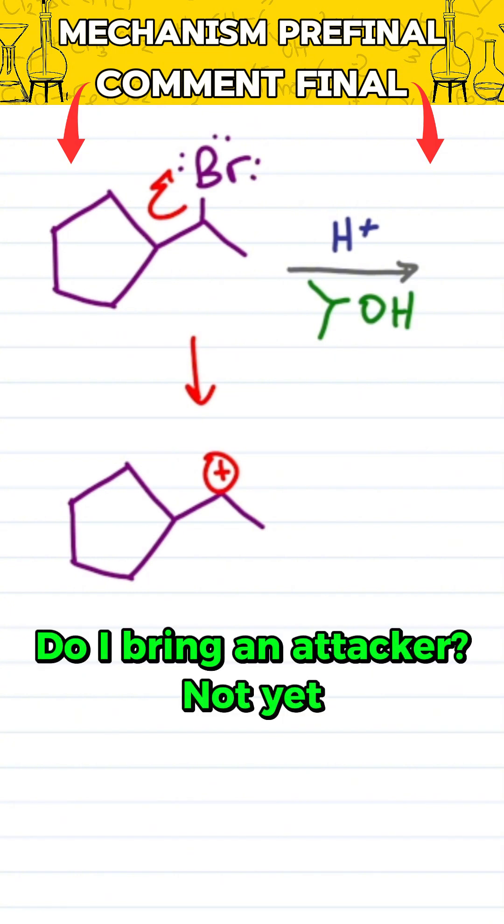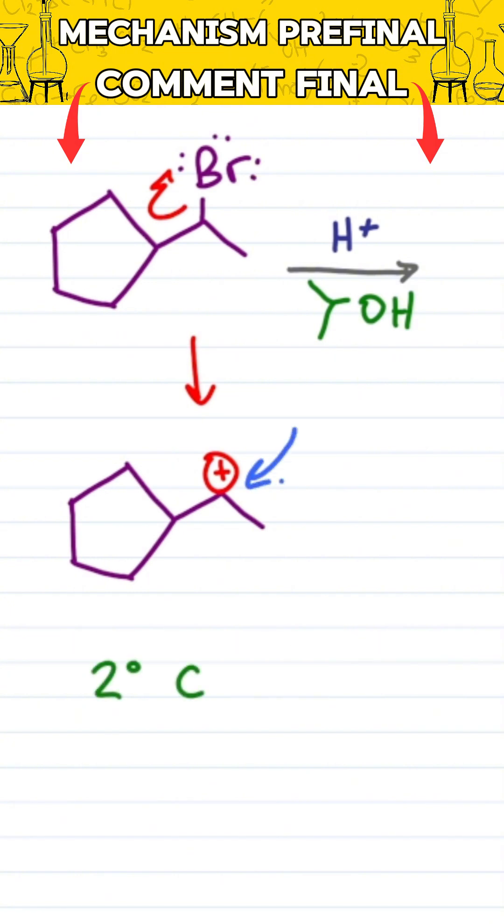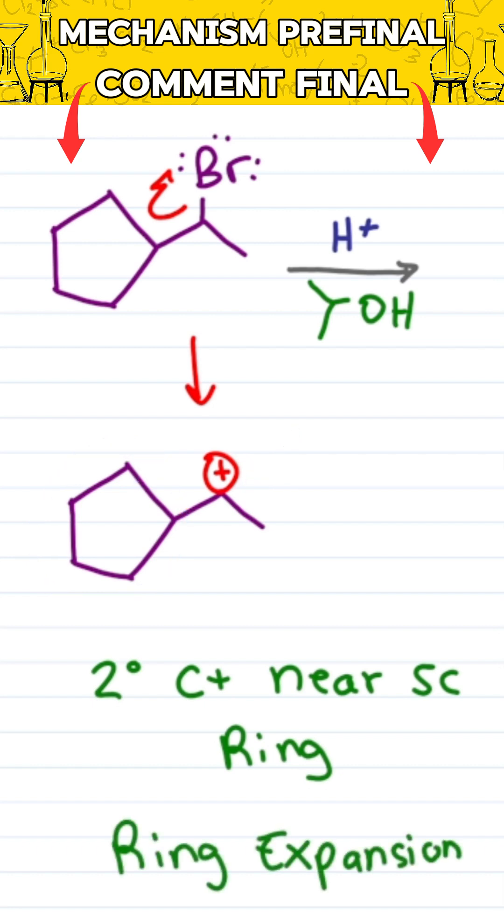Do I bring in an attacker? Not yet. If you have a secondary carbocation near a five-membered ring, you will get a ring expansion as follows.